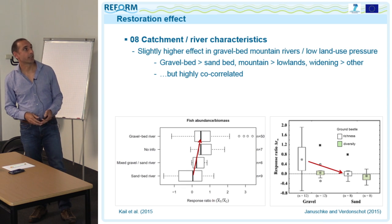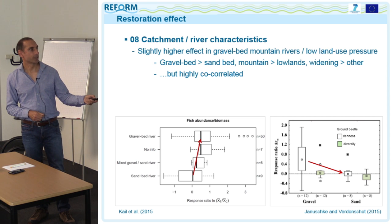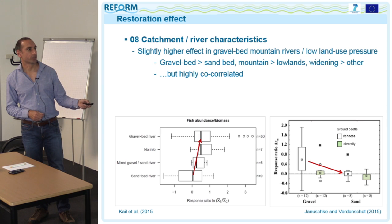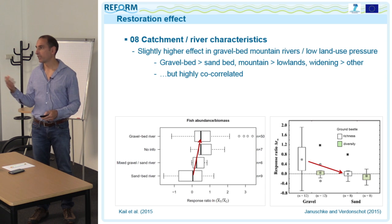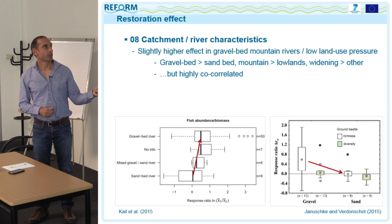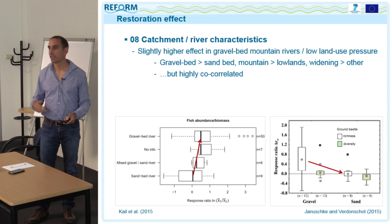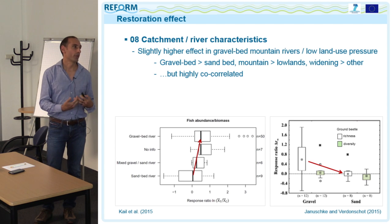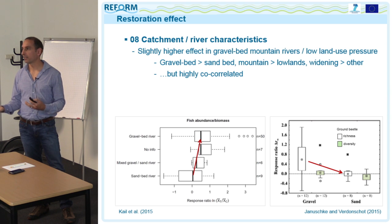We also examined catchment and river characteristics, finding a slightly higher restoration effect in gravel bed rivers compared to sand bed rivers for fish abundance and biomass, and a stronger difference for ground beetles. However, this is highly co-correlated with other factors — gravel bed rivers are typically in mountain regions where widening projects have been applied and land-use pressure is lower, making it very difficult to disentangle causal relationships.